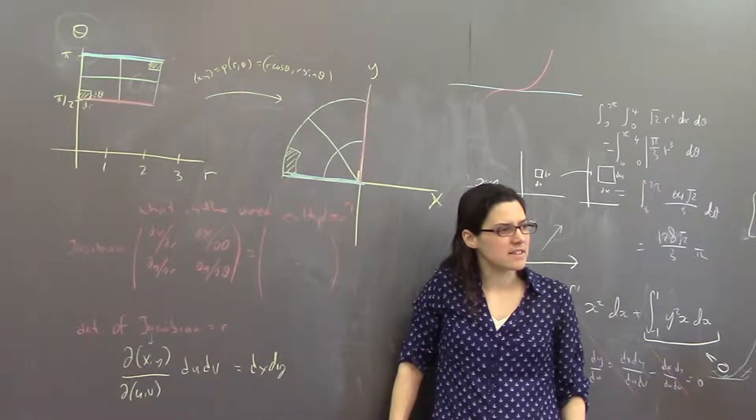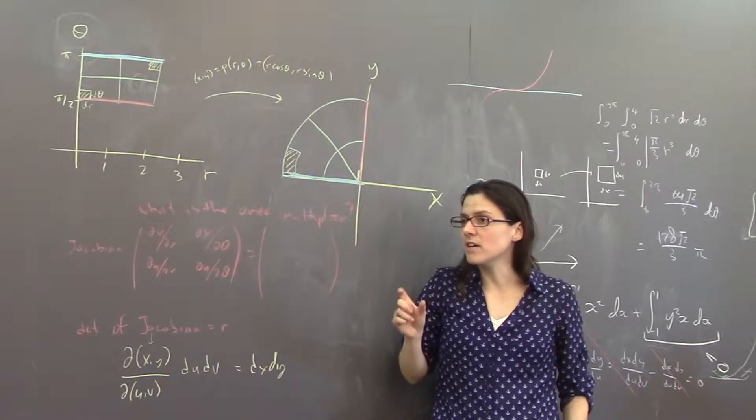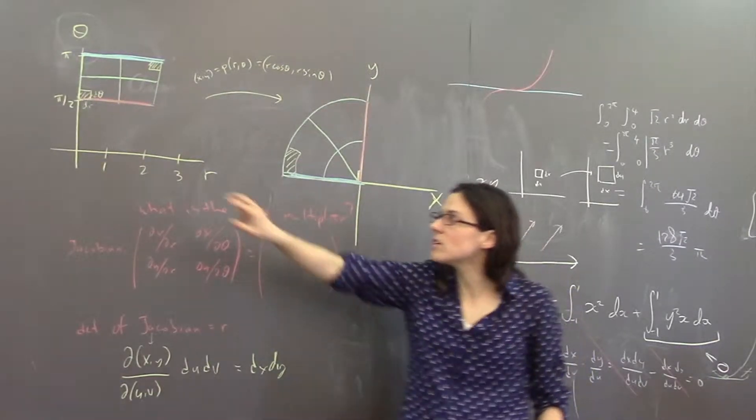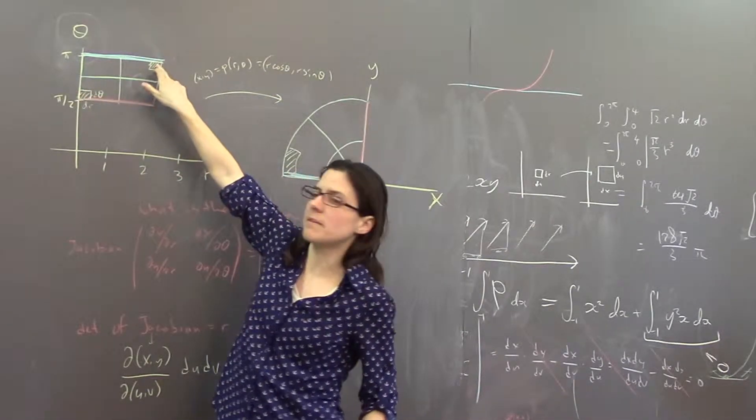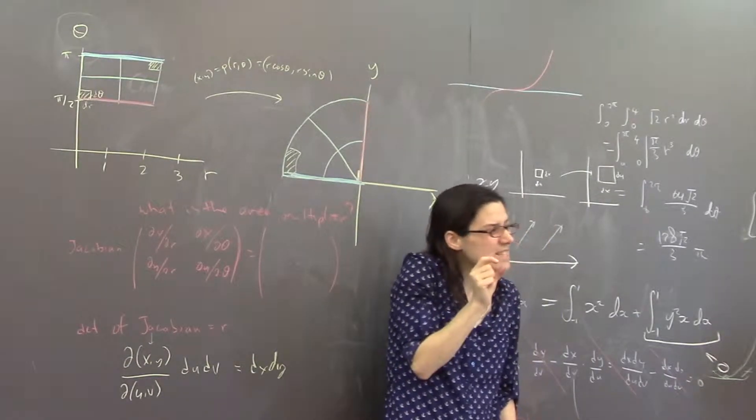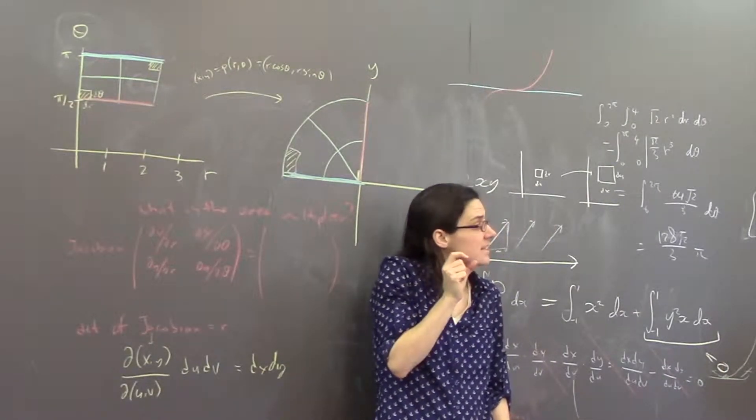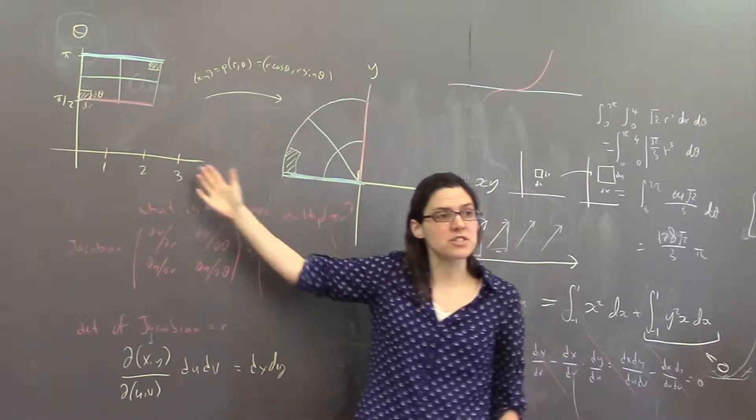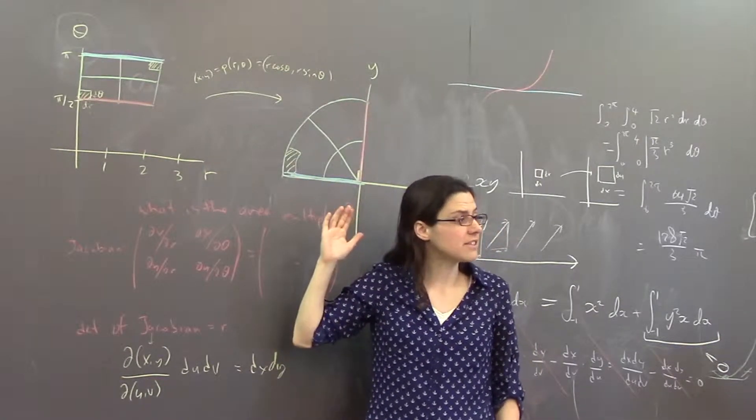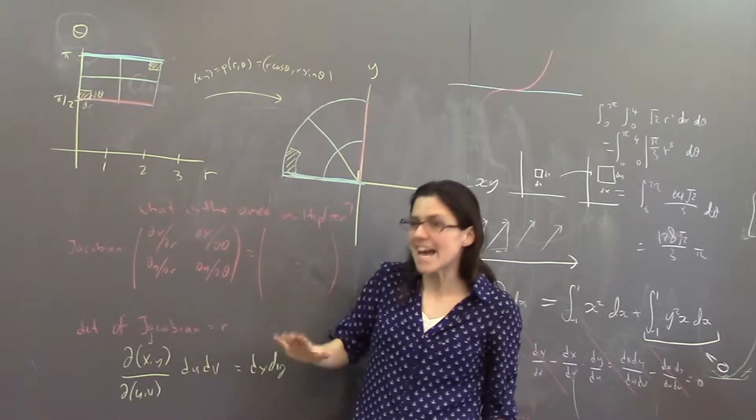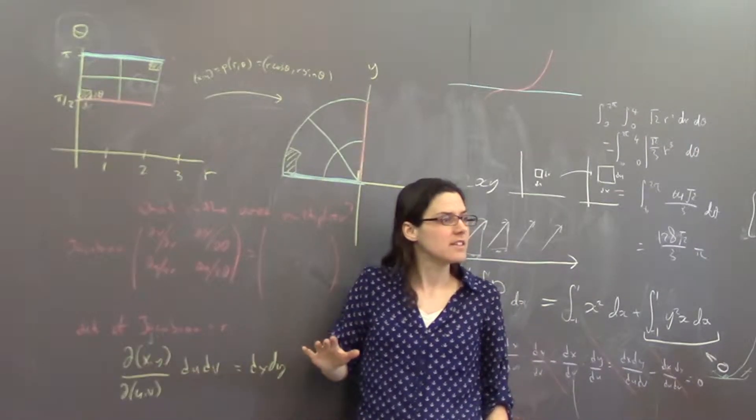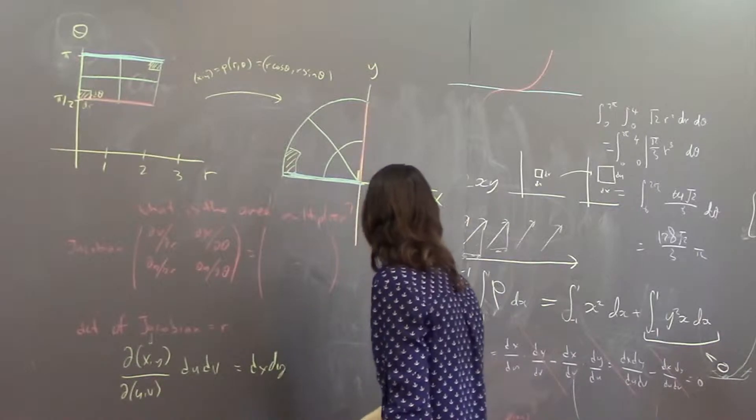When the question asks about local and limit ideas, it means locally areas are multiplied by 0 here, locally areas are multiplied by 2 up here. Your rectangles have to be really small for it to be exactly right, or your transformation has to be linear. If you have a linear transformation then the area expansion factor is exact.